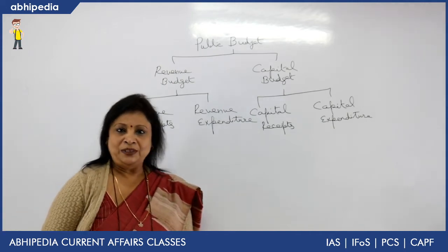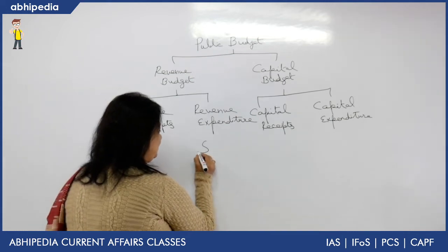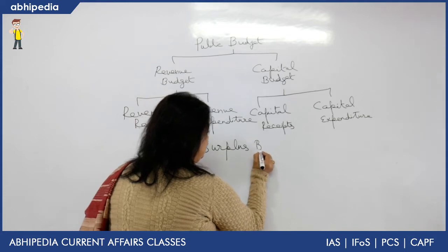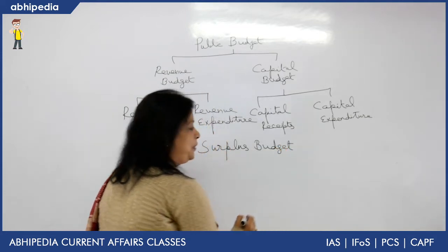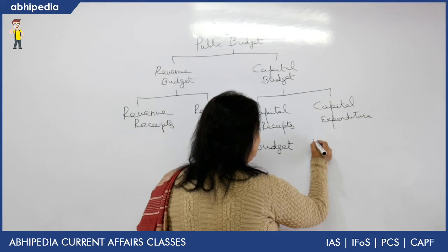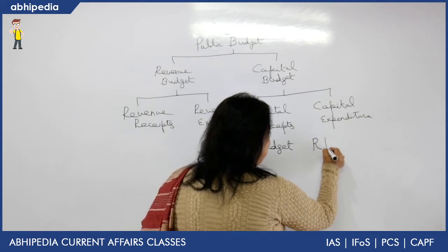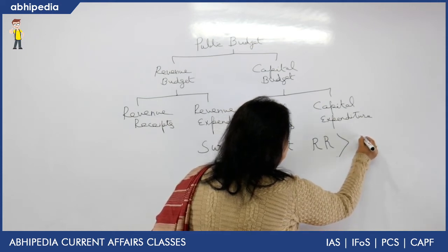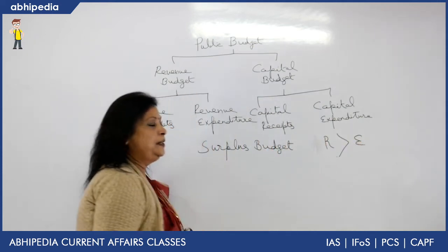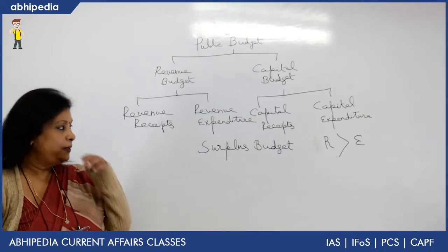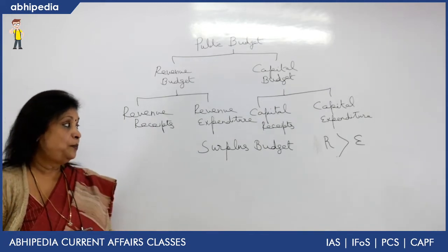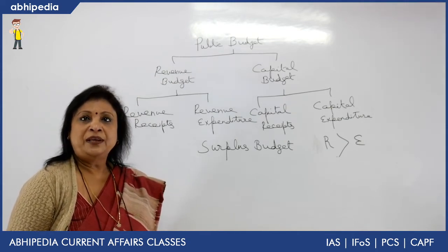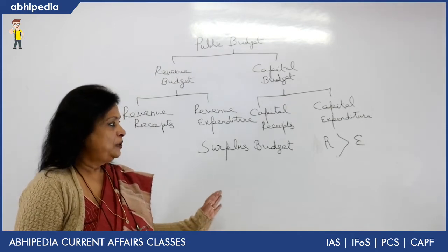Now, there are three types of budget. First is surplus budget. A surplus budget is when revenue receipts are greater than expenditure. When the receipts are greater than the expenditure, that is known as a surplus budget. This kind of budget is recommended for an affluent society, and basically when we have to check inflationary pressure, we go for a surplus budget.